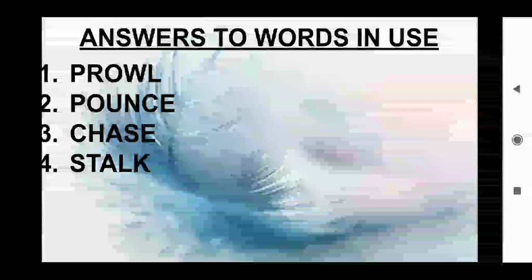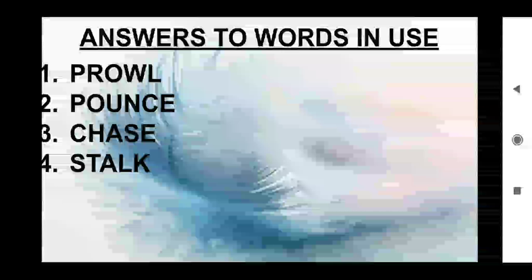Answers to words in use. Number one: prowl — to walk around the place hunting for something. Number two: pounce — to attack suddenly, usually by jumping. Number three: chase — to run after something or to catch it. Number four: stalk — to move very quietly to escape notice. Thank you.